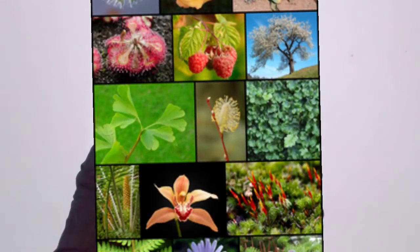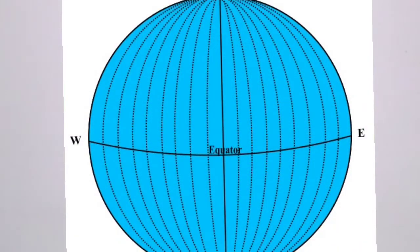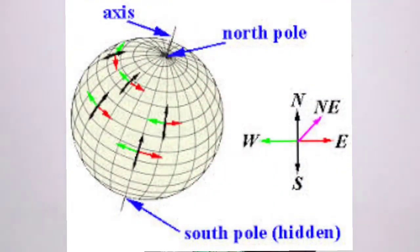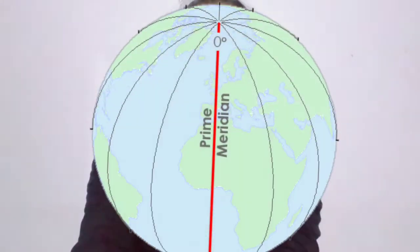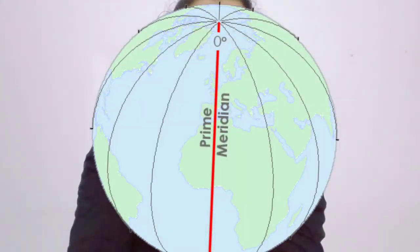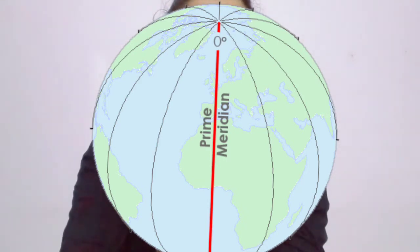Now let us study about important meridians. A vertical circular line on the globe is called a meridian. There are 360 meridians in total. The zero meridian is a very important meridian — it is called the Prime Meridian or Greenwich Mean Time (GMT). This important meridian is used to fix the global standard time and coordinate the standard time of various countries.